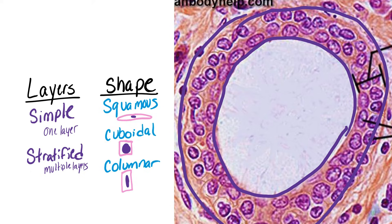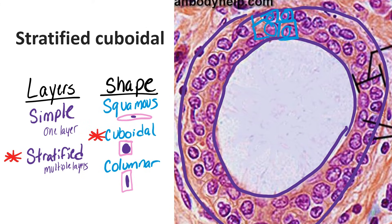We have two rows of nuclei here, which makes this stratified. And although you can't see the shape of the cells clearly, you see those circular nuclei, so you know it's cuboidal, which makes this stratified cuboidal. If you go to the school that I work at, please scrub this term from your head, because it is not in your lab book, and if you put stratified cuboidal on your test, it is wrong. However, it is an epithelium that exists, so I am including it here.